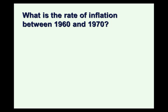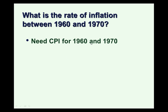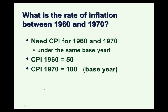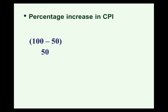So the Consumer Price Index is 50 in 1960 and 100 in 1970 in this example. We can now calculate inflation over that decade. To calculate inflation, we need the CPI for each of those years with the same base year — we've already done that. The percentage increase in the CPI is an increase of 50 relative to where we started in 1960, which was 50, multiplied by 100 to get a percent — giving us 100%. So that's an inflation rate of 100% over that 10-year period.